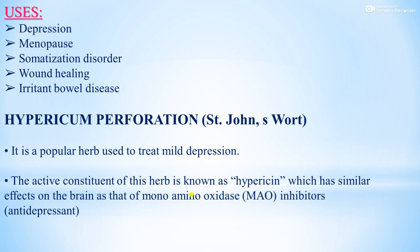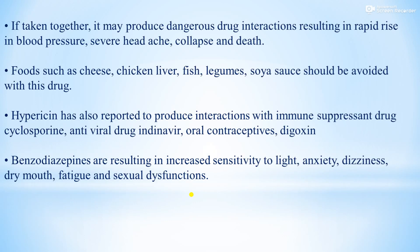If Hypericum is taken together with MAO inhibitors, it may produce dangerous drug interactions resulting in rapid rise in blood pressure, severe headache, collapse, and death. Foods such as cheese, chicken liver, fish, legumes, and soya sauce should be avoided. Hypericin has also been reported to interact with cyclosporine, indinavir, oral contraceptives, digoxin, and benzodiazepines, resulting in increased sensitivity to light, anxiety, dizziness, dry mouth, fatigue, and sexual dysfunctions.